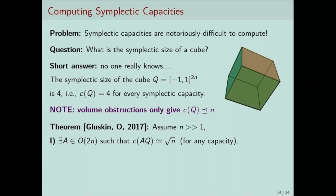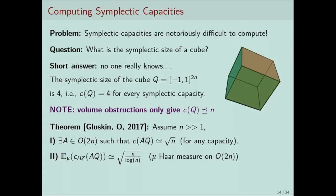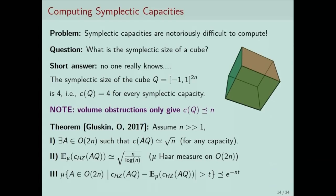But this is only for a very specific rotation. For some capacities, for example the Hofer-Zehnder capacity, we can actually compute the size of a randomly rotated cube — we can compute the expectation of a rotation of the cube with respect to the Haar measure, and we get the strange quantity: square root of n over log n. Using standard techniques from concentration of measure, we can show the deviation from the expectation is exponentially small. So really the Hofer-Zehnder capacity of a random cube is of order square root of n over log n.